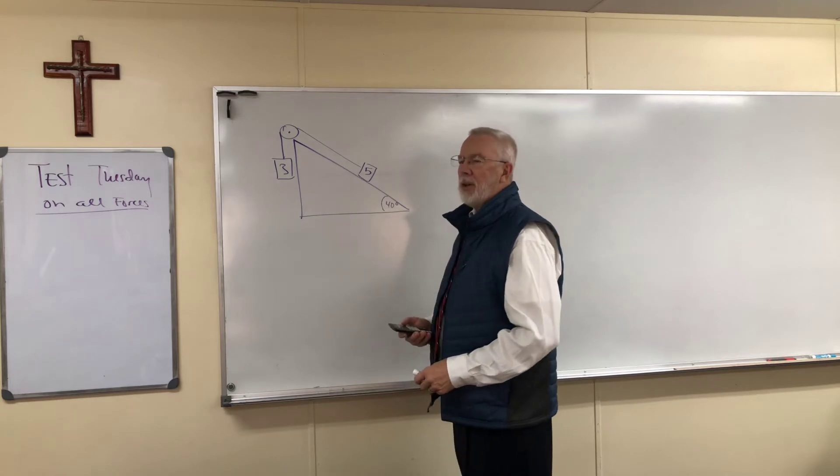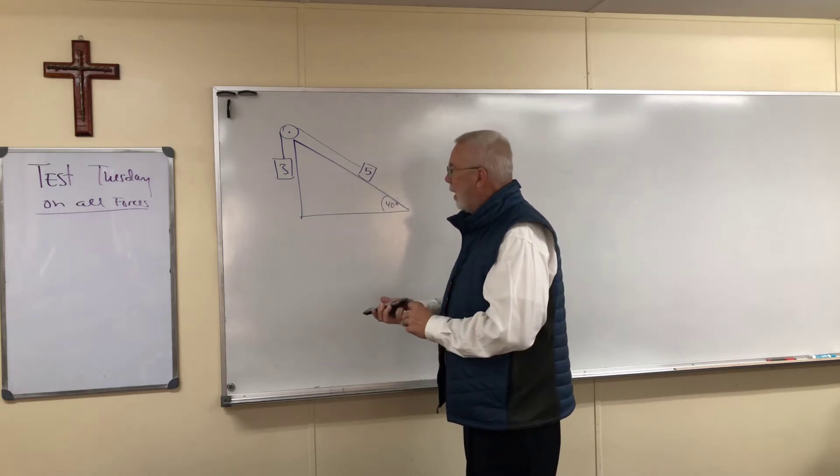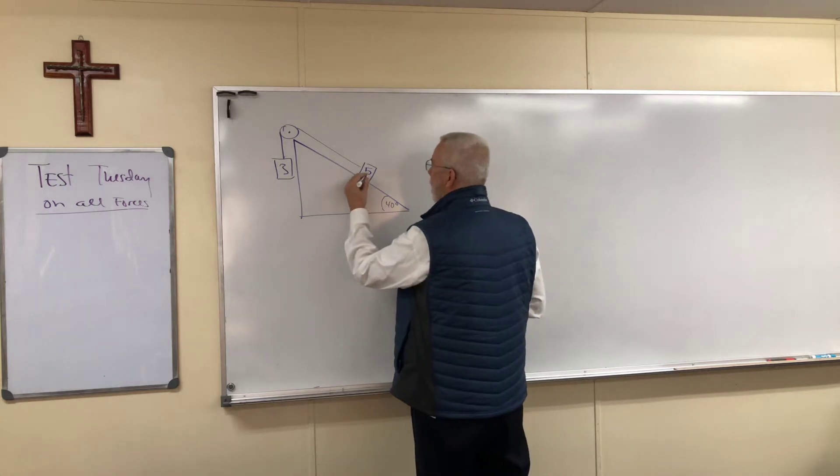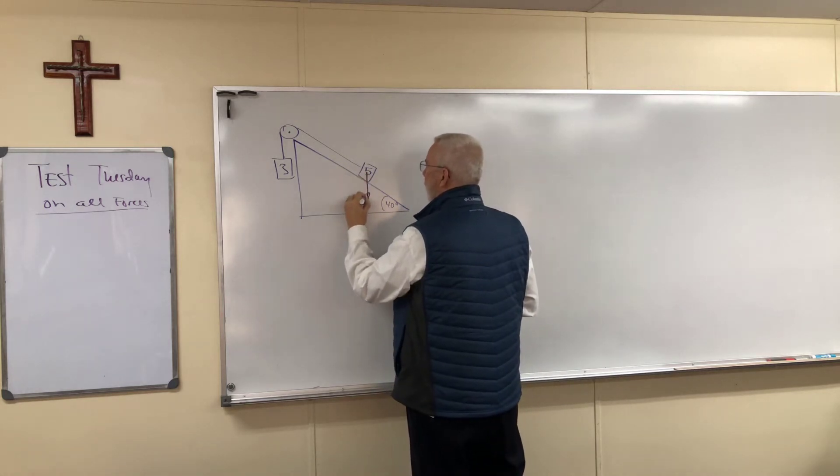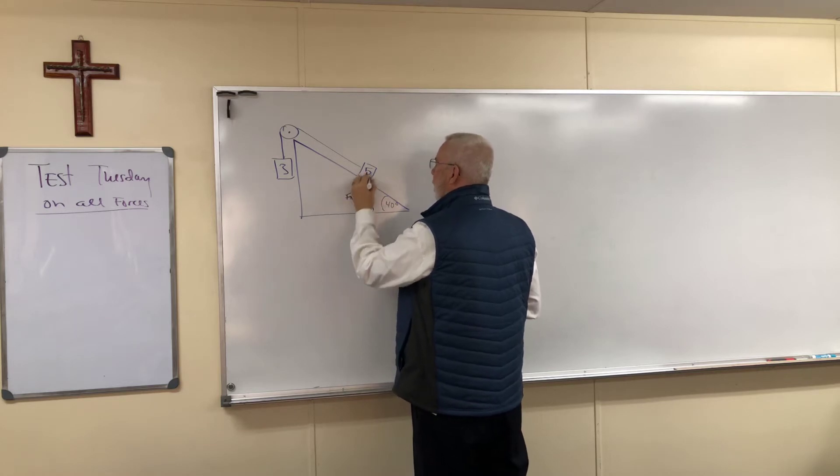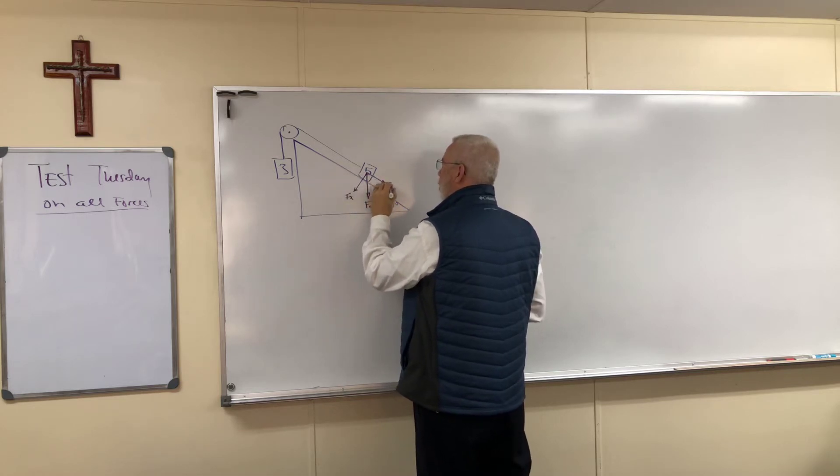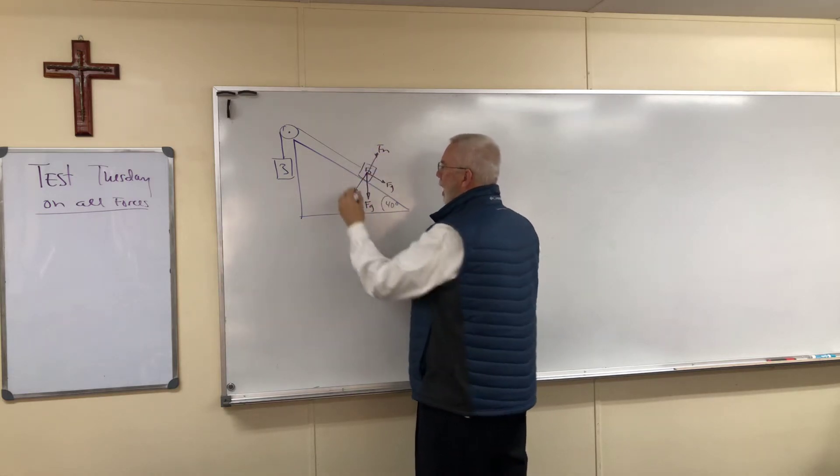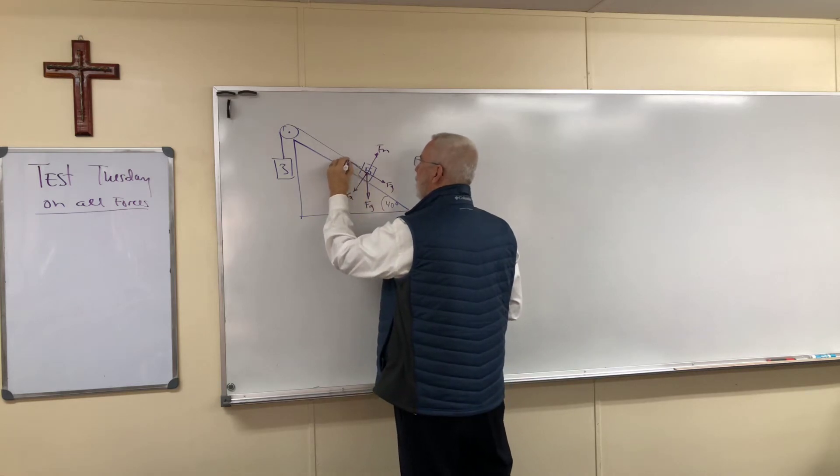So whenever you have an object on an incline plane, the very first thing that we need to do is solve for the forces acting there. We have the f of g and we have the f of x and we have the f of y, which is the one we're really interested in. We're interested in the normal force, but there's no friction, and then of course the force acting up the incline plane would be the tension.